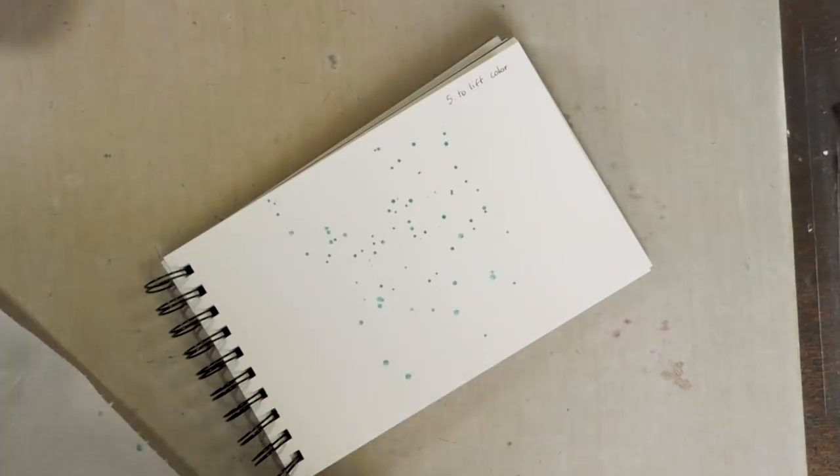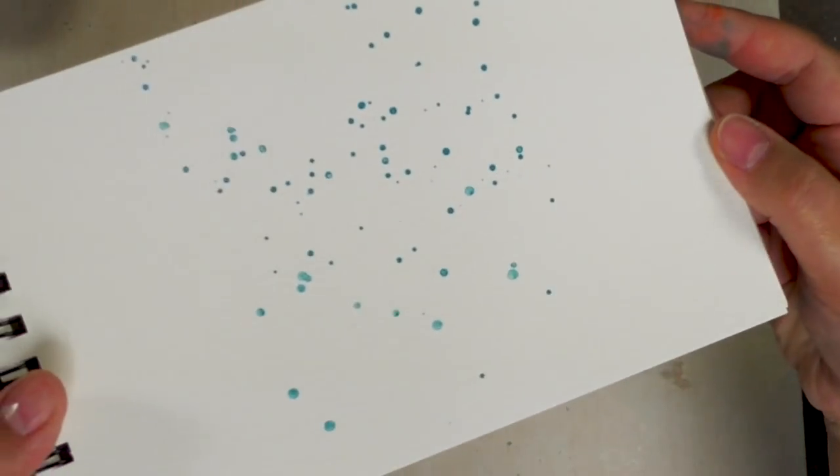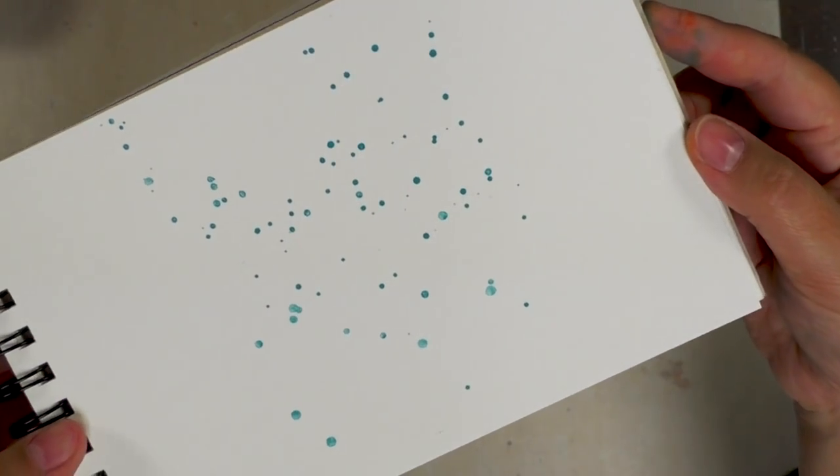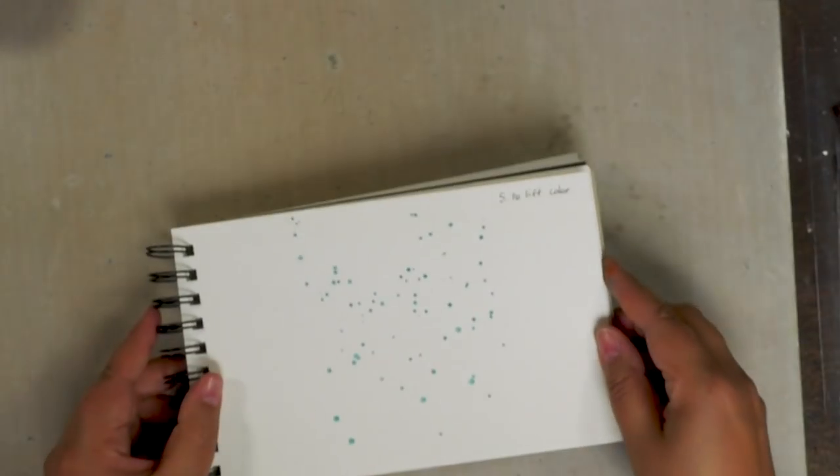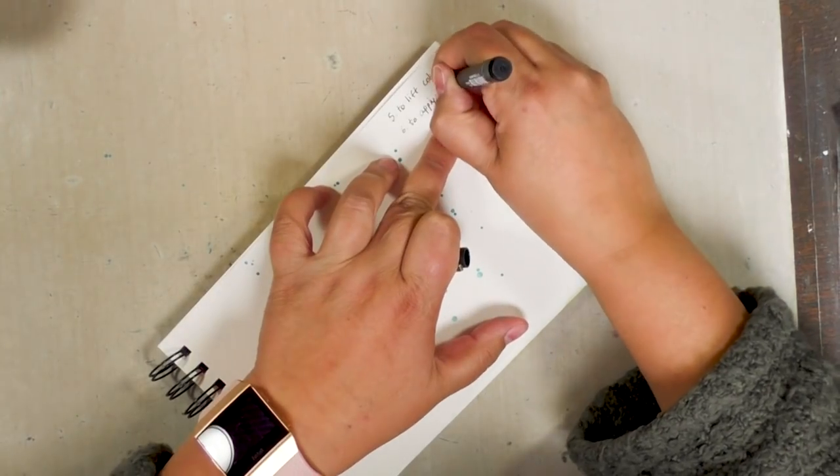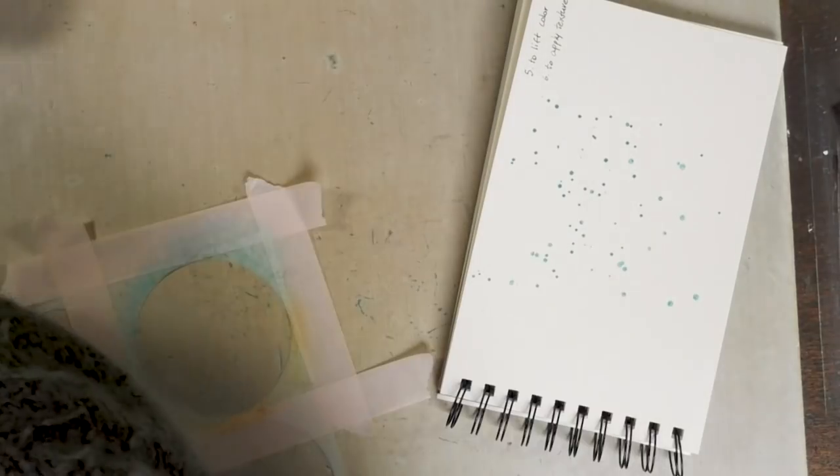And then I lift the rest of it using my kitchen roll. Now here I'm just lifting splatters, but if I do the same thing on a painted surface or an inked surface that is still wet enough and I use my kitchen roll in a crumbled way to pick up the paint, that will give me some nice texture again within the color.